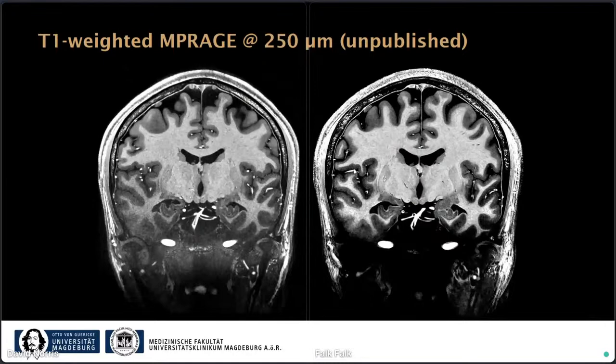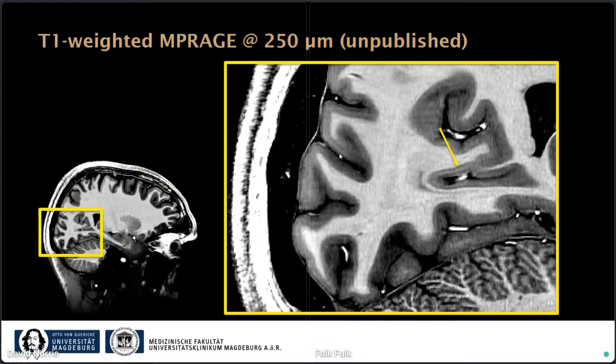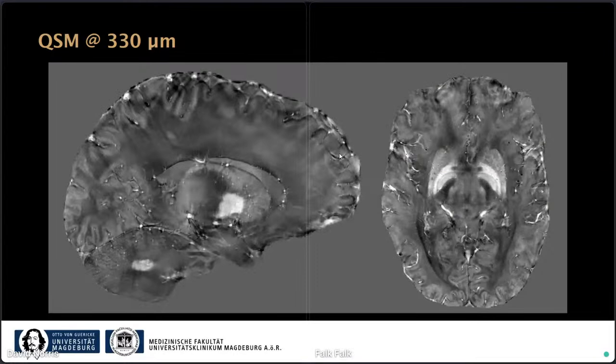Just recently — about a week ago — I revised the reconstruction pipeline further, and the currently unpublished data set is essentially noise-free while being much sharper than the original. Now we can visualize structures that were not visible before, for example the stria of Gennari in the occipital lobe, which is now detectable just visually.